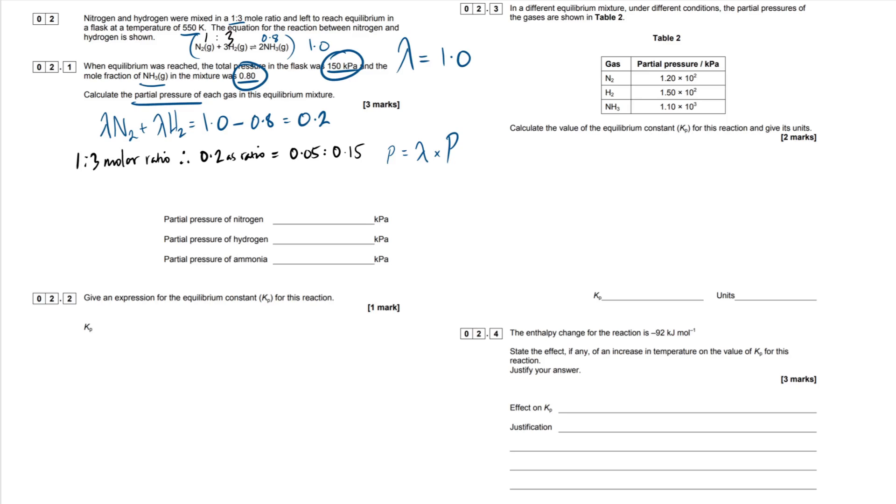If you look at the Haber process reaction, N2 plus 3H2, this has a molar ratio of one nitrogen to three hydrogens. So we can say that there's a one to three molar ratio. Therefore, the mole fraction ratio, 0.2 as a ratio then is going to equal this divided by four. So that's going to be our one portion of the ratio, so 0.05 to three quarters of this 0.2, because this collectively is four. The hydrogen mole fraction is going to be 0.15, and collectively this adds up together to be 0.2.